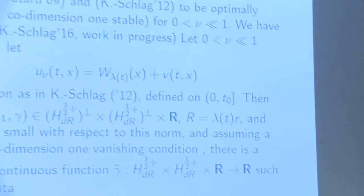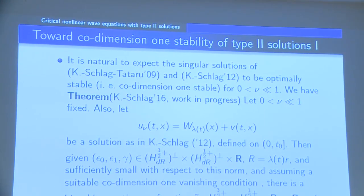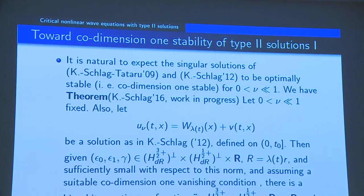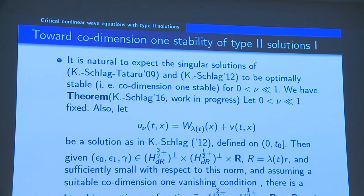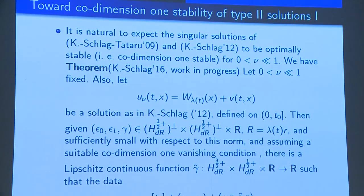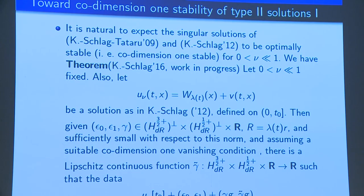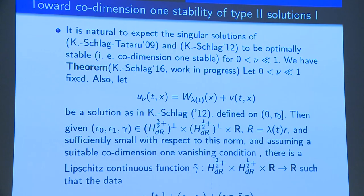The result is the following — this joint work with Schlag is a work in progress. Assume you have a type 2 blow-up solution of the type constructed by Schlag and myself in 2012. Basically, you have to require ν to be sufficiently small, and I think ν less than 1/3 is enough — it doesn't have to be extremely small, but just small enough.